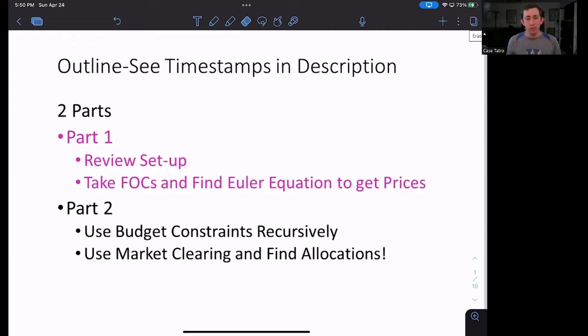What we're going to do today, we're going to quickly review the setup of the sequential markets equilibrium world. Then we are going to take first order conditions and get the Euler equation. We're going to use the Euler equation to get prices and also an idea of how both Bill and Dave's consumption changes over time.